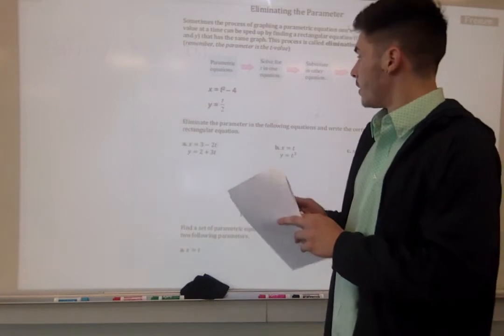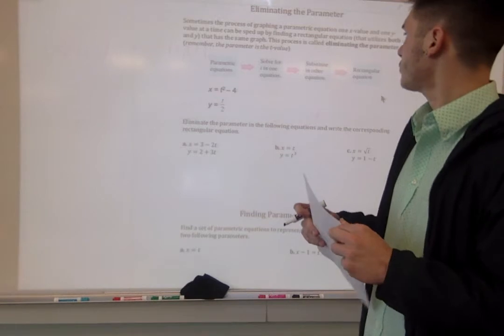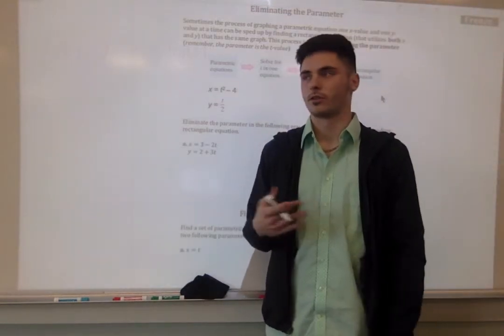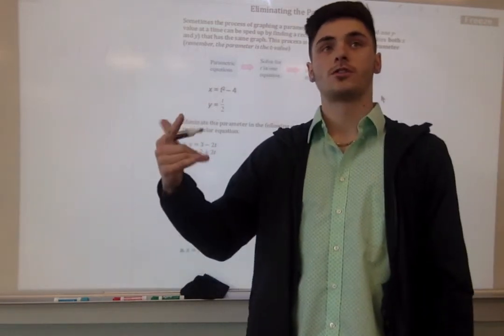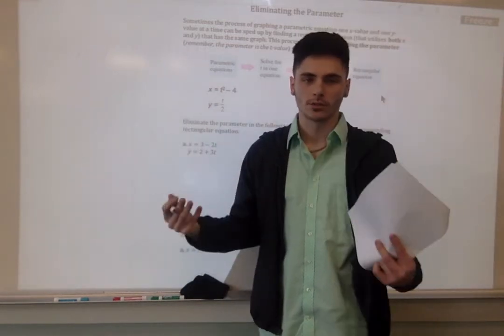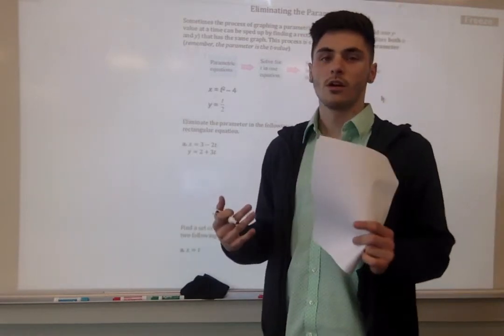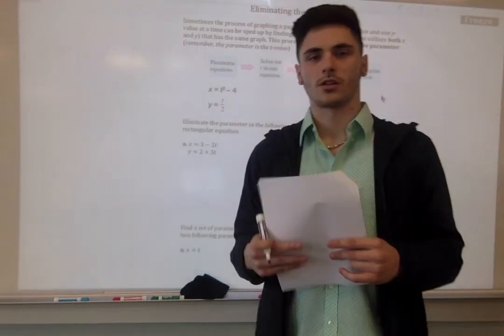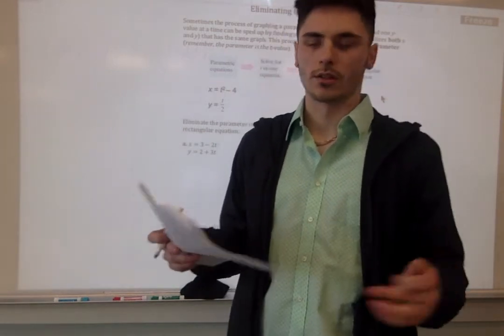When we are eliminating a parameter, the reason we would want to do this is because when we're graphing a parametric equation, sometimes it's difficult or tedious to do two different equations. We're plugging in t to two different functions and writing down the outputs for both of them, and then graphing those. That can be a tedious process. If we're given parametric equations, we can figure out how to put those together to get a rectangular equation, which I like to think of as a normal equation, just something that we're used to seeing.